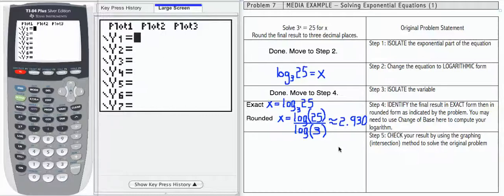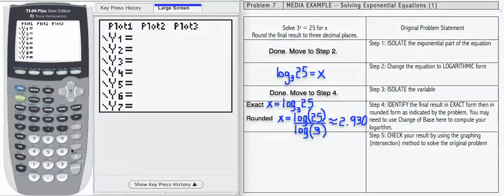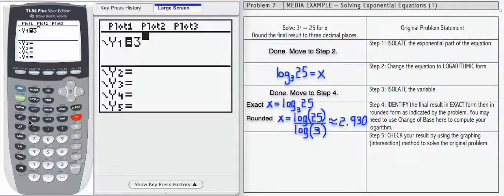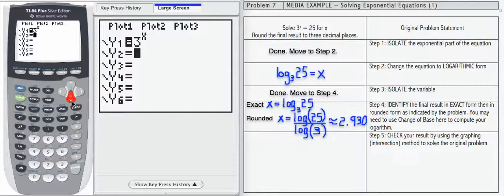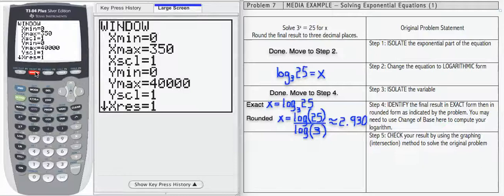Now to check these, I'm going to use my calculator and the intersect method and see if we can come up with that 2.930. So let's start with y1 and y1 is going to be 3 to the x, it's going to be the left hand side of my equation. Y2 is going to be the right hand side, which is 25.